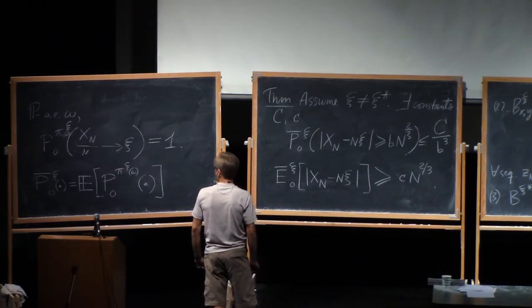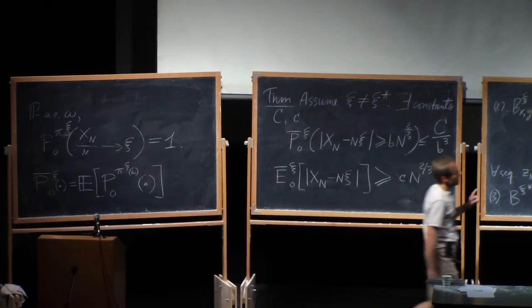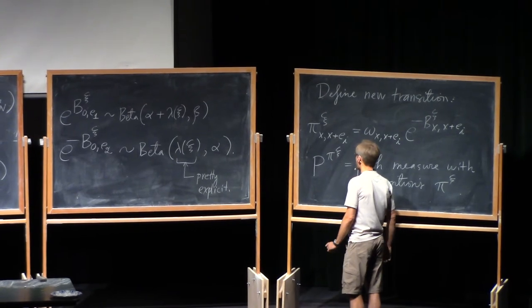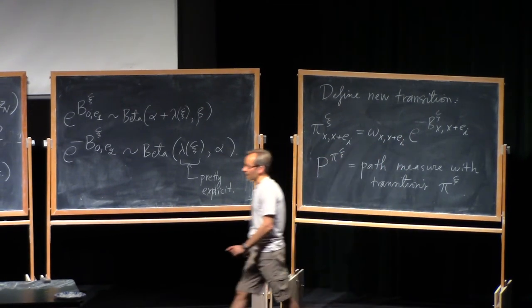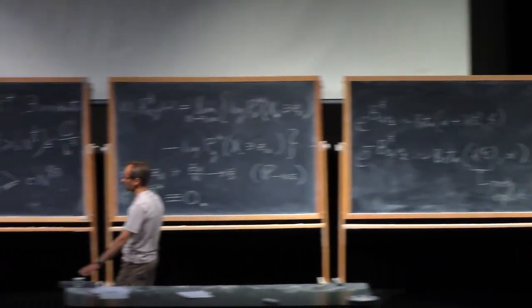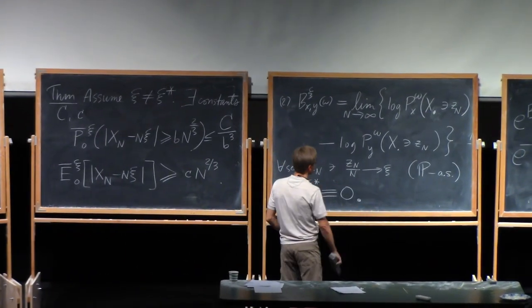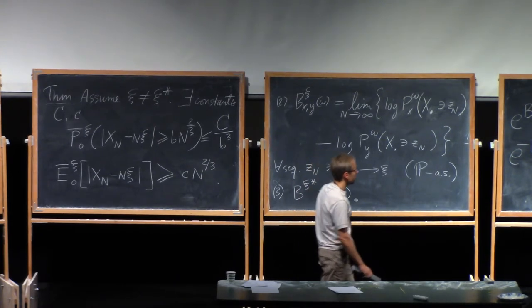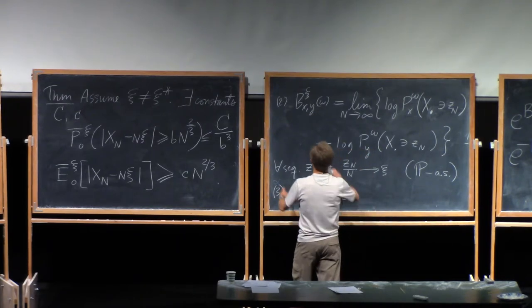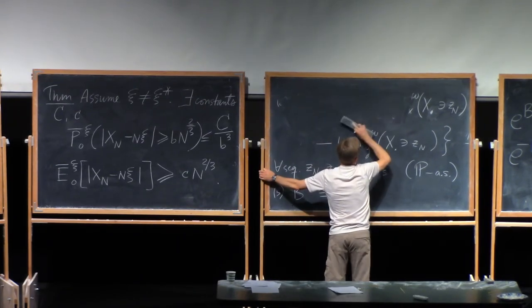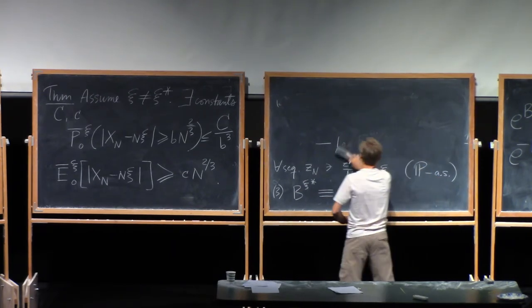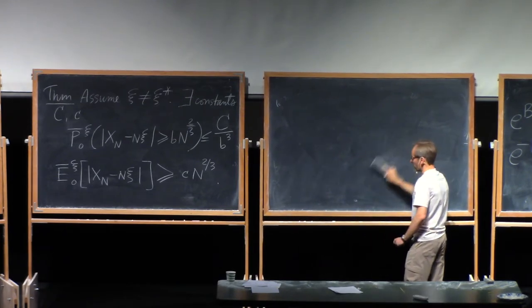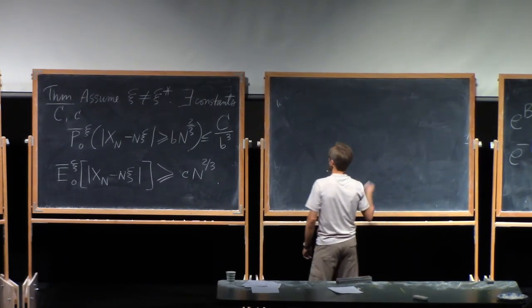So this path measure was kind of introduced by Fiat now, by doing this Dube transformation. And if you still remember back at the first few moments of my talk, I did say that it's also... It's the random walk conditioned on an atypical velocity. So let me add that theorem for the last thing here. That this transformed walk comes as a limit when you condition the original walk to go in that direction, Xi.